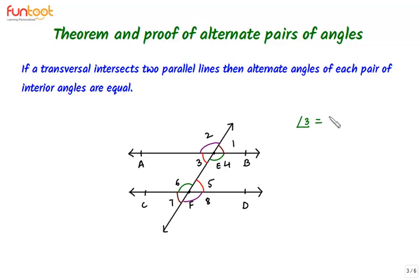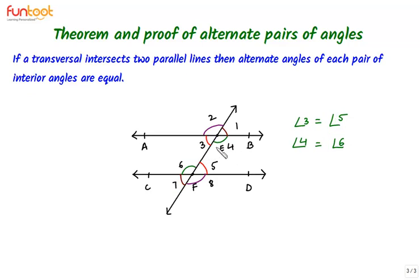What we have to prove in this theorem is that angle 3 is equal to angle 5 and angle 4 is equal to angle 6. We have two parallel lines AB and CD intersected by the transversal EF. We can use the corresponding angle axiom, which states that when a transversal intersects parallel lines, corresponding angles formed are equal. We are proving that interior alternate angles are equal — that is why we call this a theorem and not an axiom, since for an axiom we don't have proof. We can also use vertically opposite angles and linear pairs as needed.